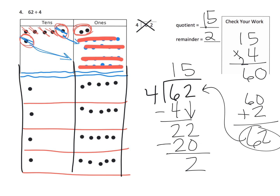We're using the place value chart to make the standard algorithm make sense. For differentiation: if some students no longer need the dots, tell them to put the dots away and just use the standard algorithm. The point of the Common Core standards isn't to prevent kids from using the algorithm — the point is to teach these dots so that when the algorithm is ready to be learned, it makes sense. If students already understand the standard algorithm, they no longer need to do the dots.